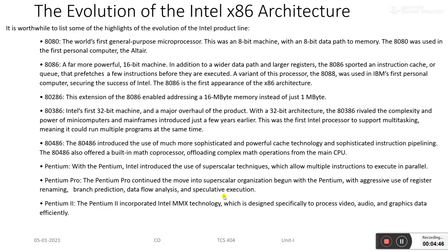Pentium 2 incorporated Intel MMX technology, which is designed especially to process video, audio, and graphics data. Before Pentium 2, graphics data processing required a separate processor, but Pentium 2 brought MMX technology into the picture. MMX stands for Multimedia Extensions technology, and it was used for video, audio, and graphics data processing efficiently.